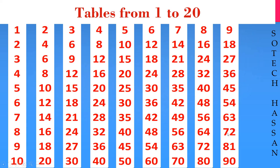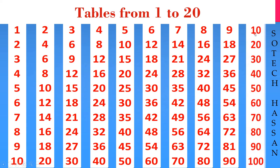9 8s are 72, 9 9s are 81, 9 10s are 90. 10th table: 10 1s are 10, 10 2s are 20, 10 3s are 30.